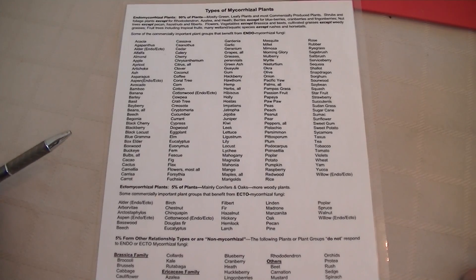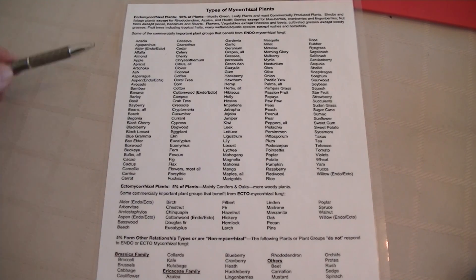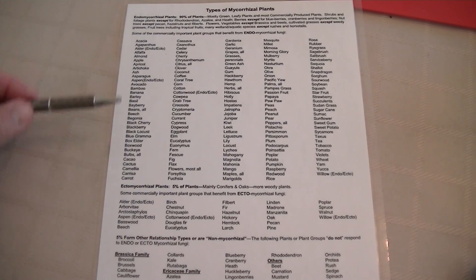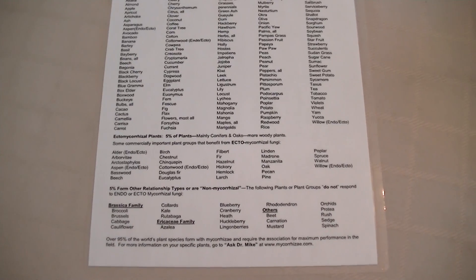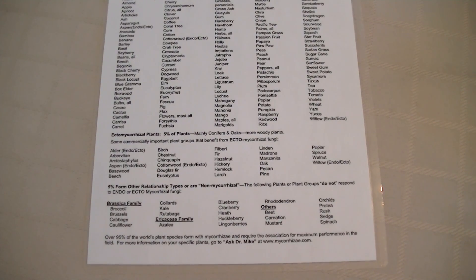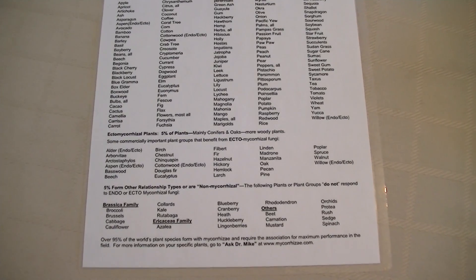So here I have a list of all the plants that use mycorrhizal fungi, the two different types. We have endo and ecto. And down below here, let me get a better shot for you, we have our brassica family, which doesn't use anything at all.